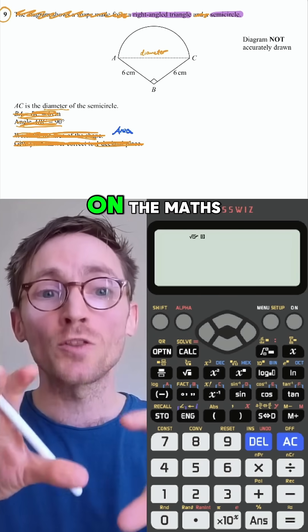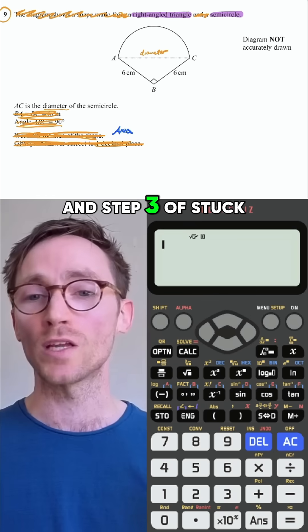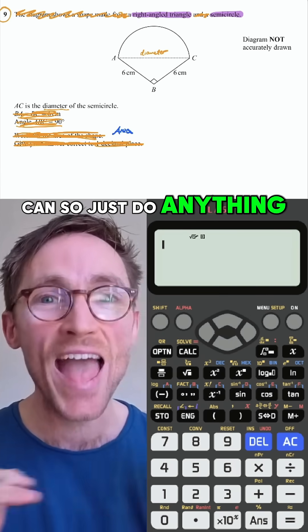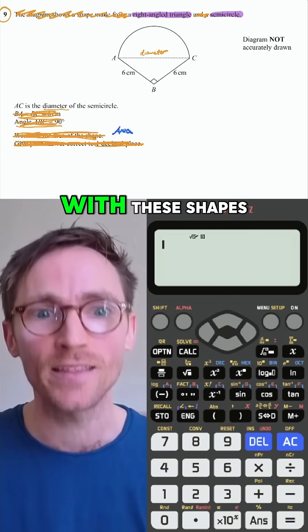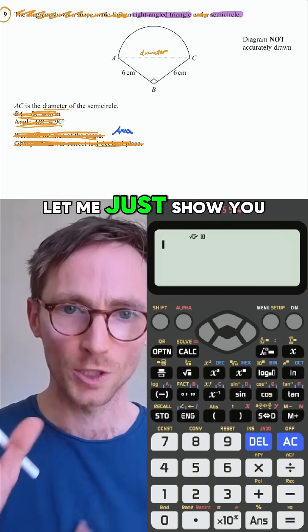Step two is just focus on the maths. We've got diameter, we've got right angle triangle, we've got a semicircle. And step three of stuck mode is do whatever you can. So just do anything. If you can do anything with these shapes, you're going to be getting marks for it. This is a five mark question.